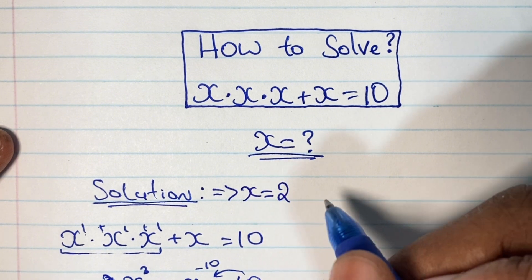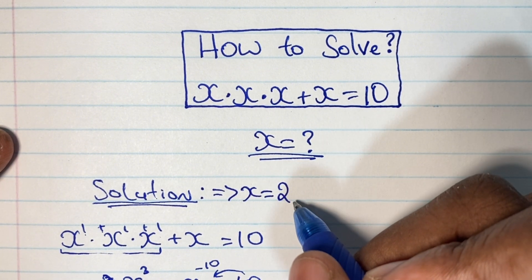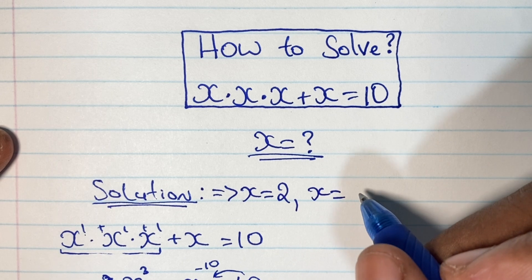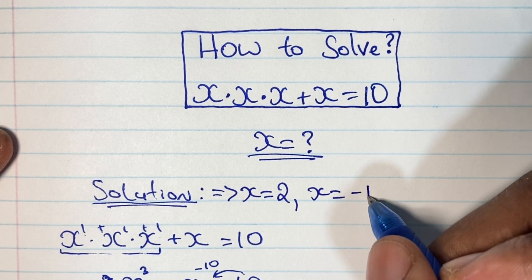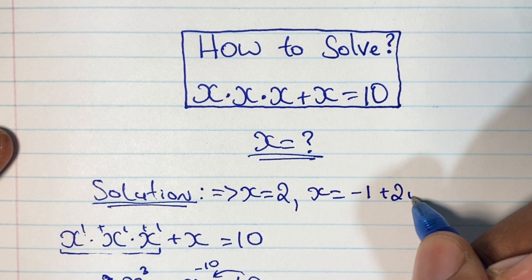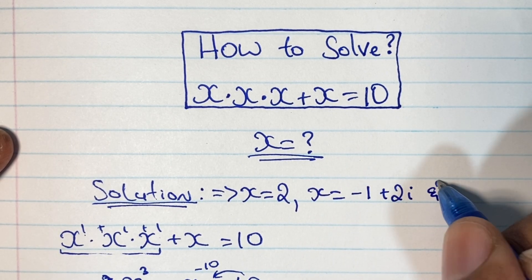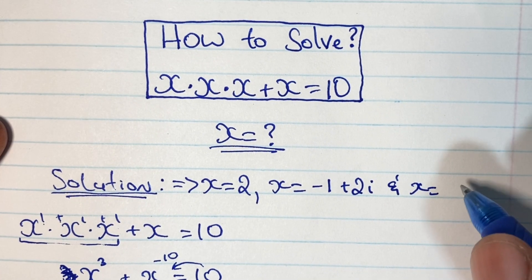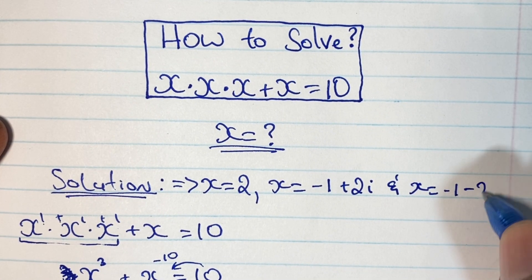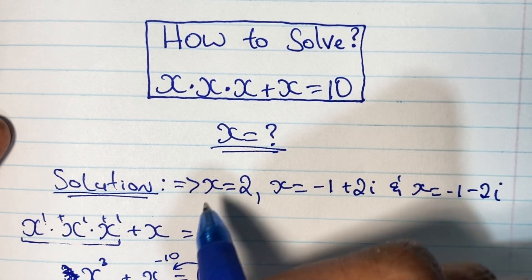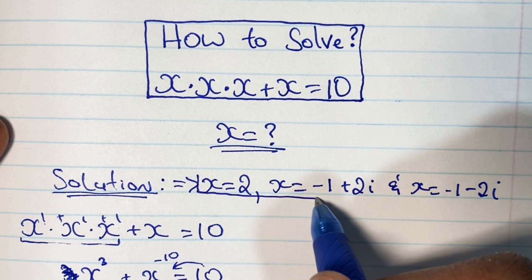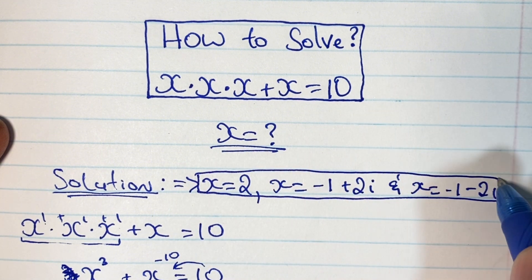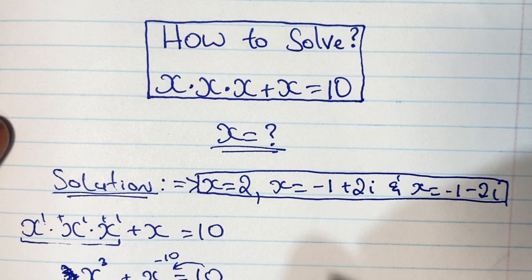So here are our three solutions for x. The first solution is x equals 2. The second solution is x equals negative 1 plus 2i. The third solution is x equals negative 1 minus 2i. We have two complex solutions and one real solution.